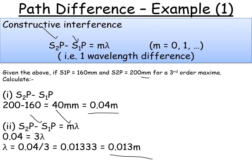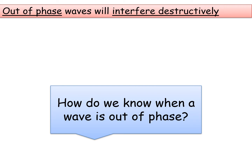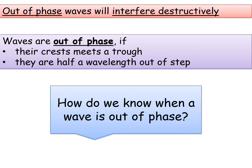Now let's move on to destructive interference. Out-of-phase waves will interfere destructively. Waves are out of phase if the crest meets a trough, or if they're half a wavelength out of step — that could be a half, one and a half, two and a half, three and a half. So how do we use path difference to calculate out-of-phase waves?